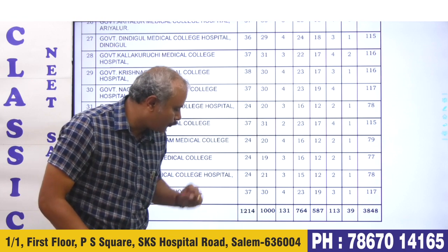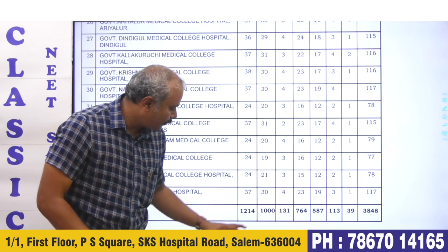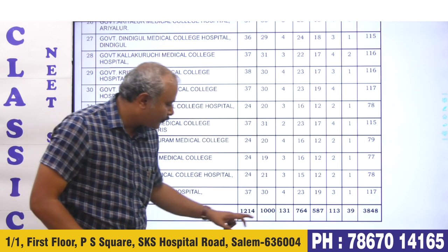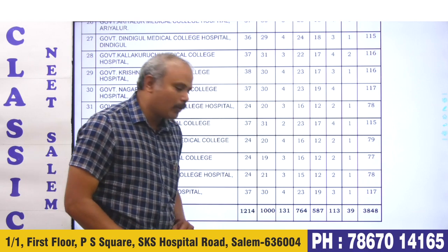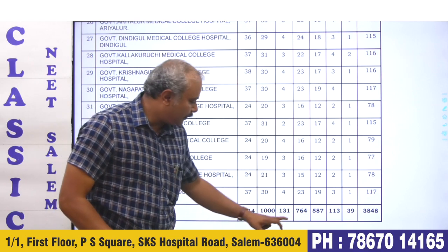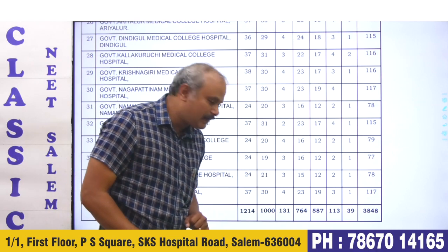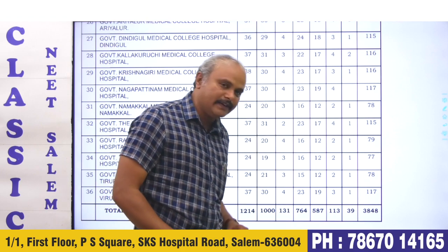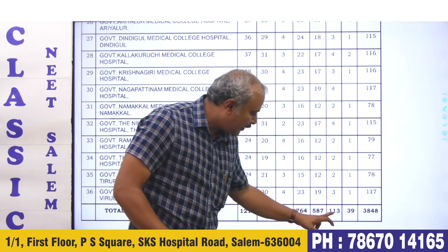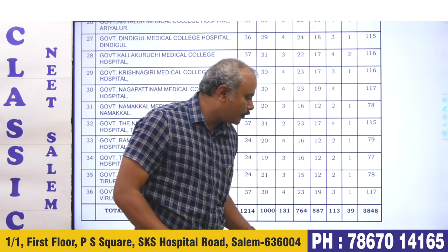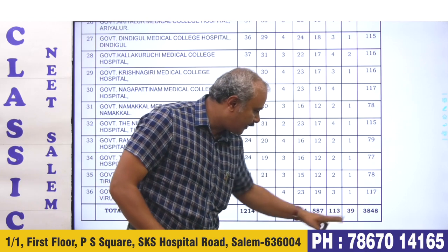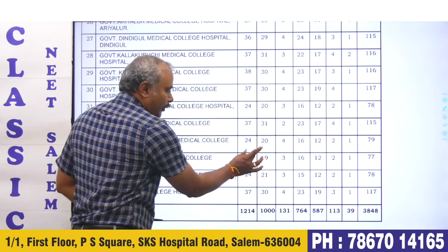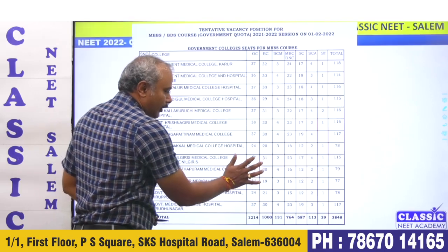If we look at it, OC will be 214 seats, BC 1000 seats, BCM 131 seats, MBC 764, SE 587, SEA 113, ST 39 seats. These are the seats allotted last year.